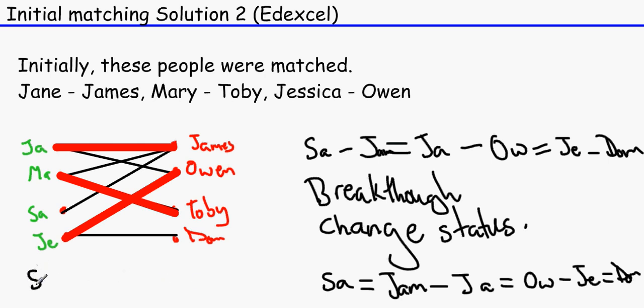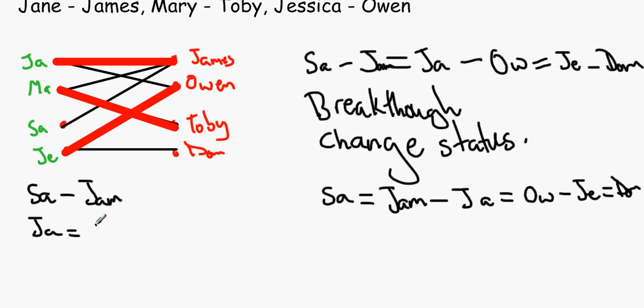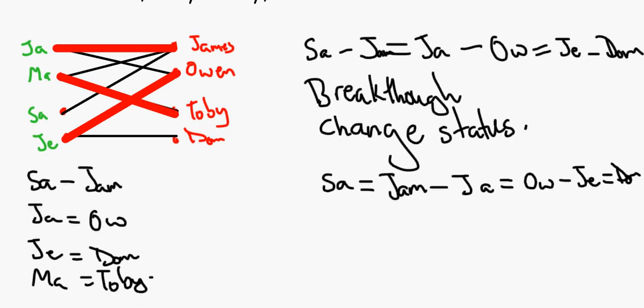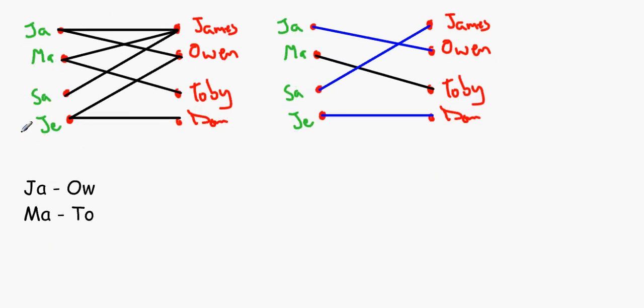So we have got Sarah connected with James, Jane connected with Owen, and Jessica connected with Dom. Oh, and also Mary connected with Toby. Okay. Remember, there may be one or more complete matchings. But this is obviously different to that one because I went through a different route, shall we say. So we can see James is connected with Owen, Mary's connected with Toby, Jessica's connected with Dom, Sarah's connected with James.